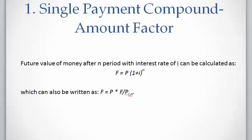As explained earlier in Lesson 1, future value of money after n periods with interest rate of i can be calculated as F = P(1+i)^n, which can also be written regarding the factor notation that was explained in previous videos as F = P times the factor.